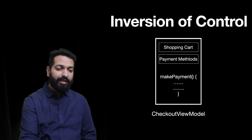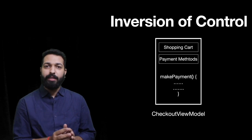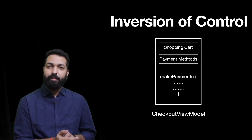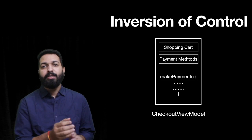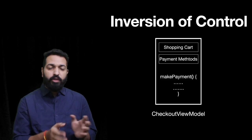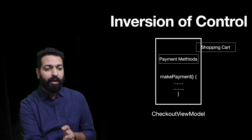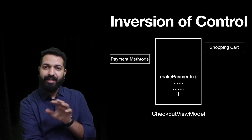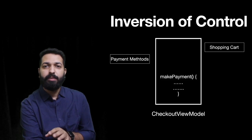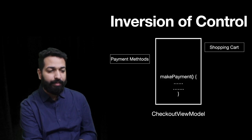Consider this entity: the checkout view model. It has two dependencies — shopping cart and payment methods — and one method, make payment, which is its core responsibility. Following the concept of inversion of control, we should remove the dependencies. We can remove shopping cart and payment methods outside the implementation of checkout view model, so the only responsibility of checkout view model will be make payment. This follows the S principle of SOLID.